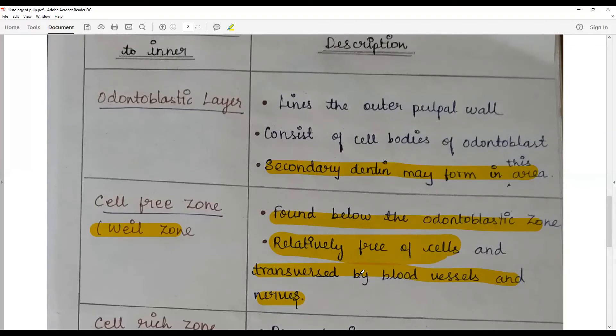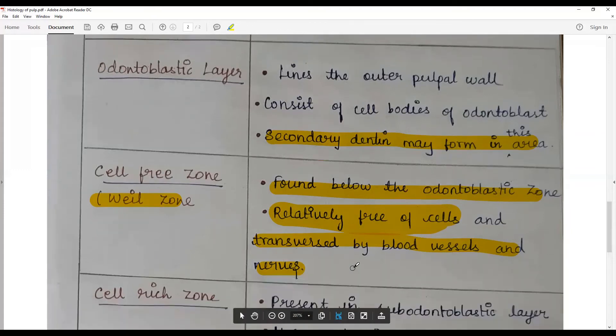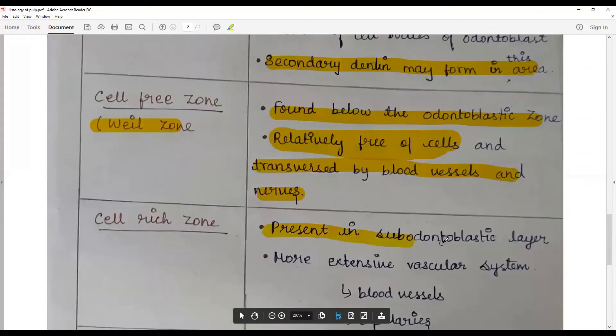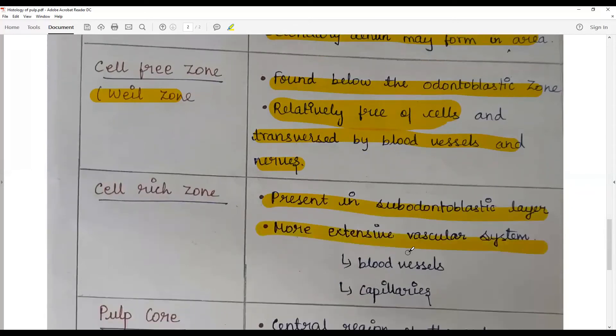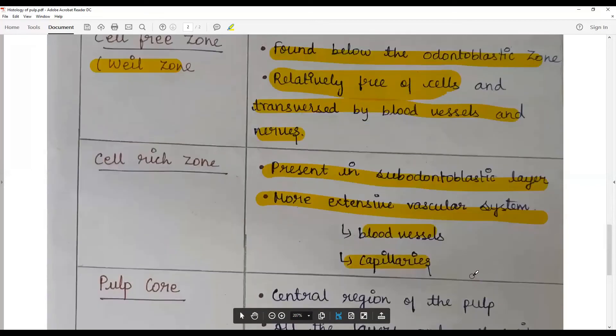Cell-rich zone present in the subodontoblastic layer just below the Weil zone has more extensive vascular system, blood vessels, capillaries and it is more responsive for the protections. You'll find a lot of defense cells.